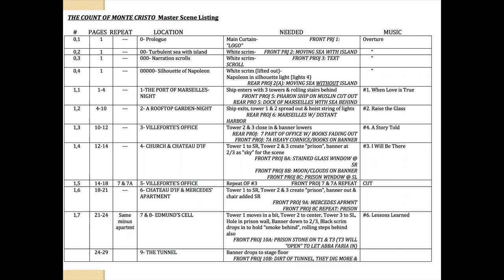Next I'll take that breakdown and create what I call the master scene list. In this sheet I take information from the original breakdown — references to lines and pages — and start denoting what the actual locations are. Going past the zeros, the first real location is the Port of Marseille. Number two is a rooftop garden at night. Number three is Viafort's office. Number four is the church. I'm getting an idea of how many locations I have, and this show from the Count of Monte Cristo had a lot of different locations.